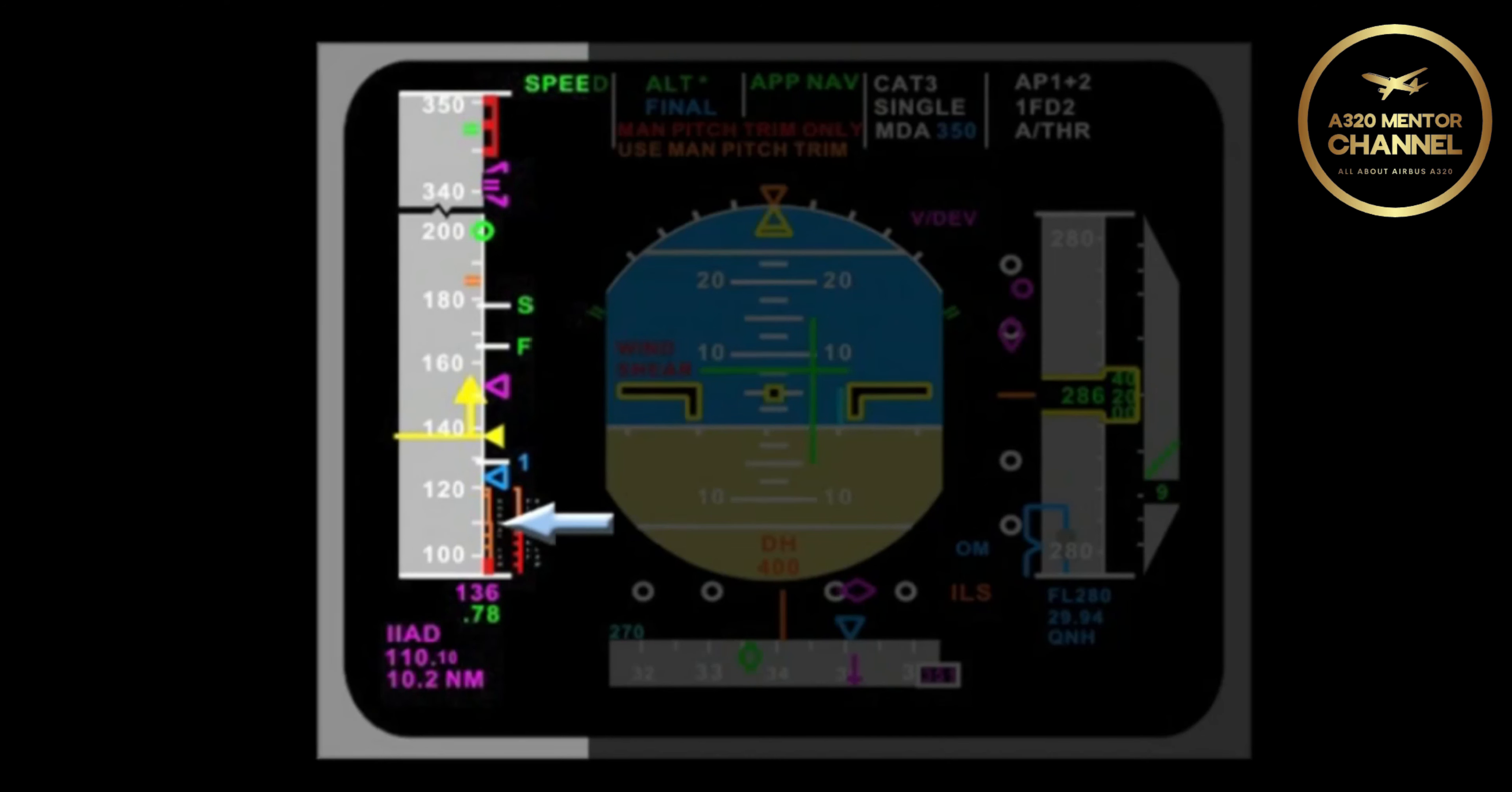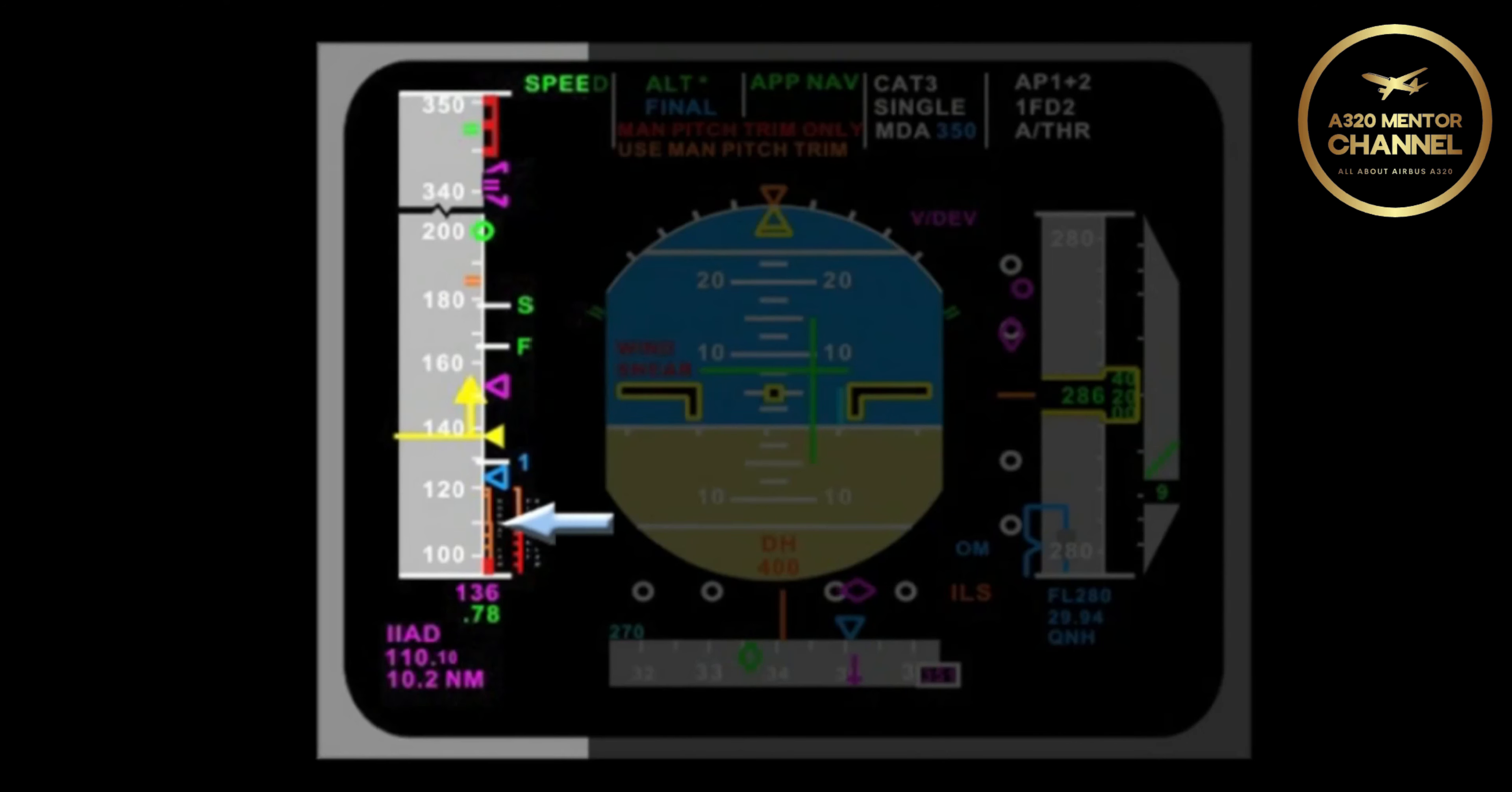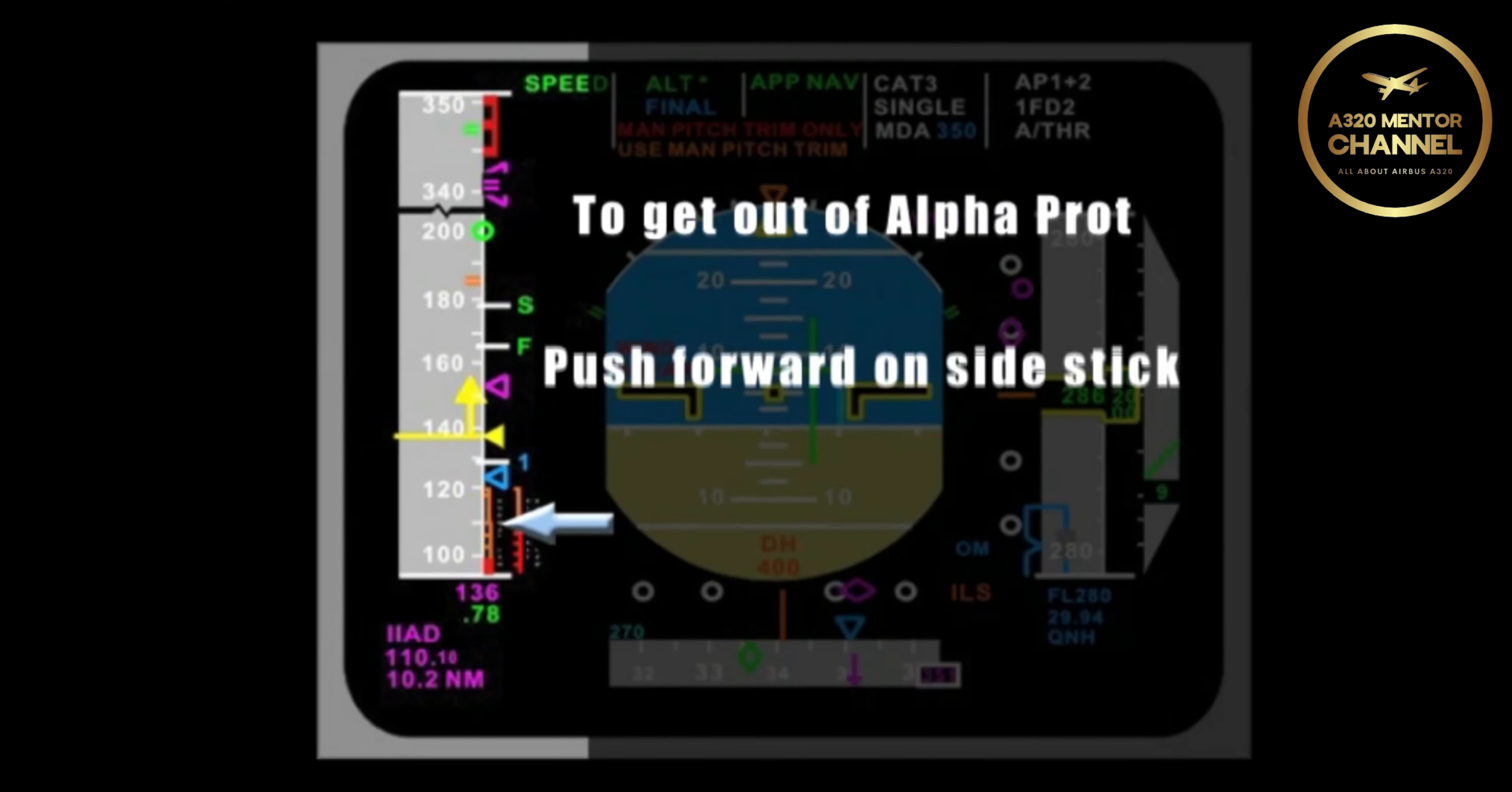While in alpha protection, you let go of the side stick. What will occur? The nose will drop for the aircraft to maintain the top of alpha-prot speed. What pilot input is required to get out of alpha-prot? I would have to push forward on the side stick.